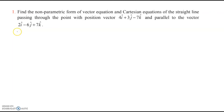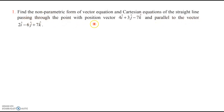Let's solve the problems from exercise 6.4. The first question is: find the non-parametric form of vector equation and Cartesian equations of the straight line passing through the point with position vector 4i + 3j − 7k and parallel to the vector 2i − 6j + 7k.